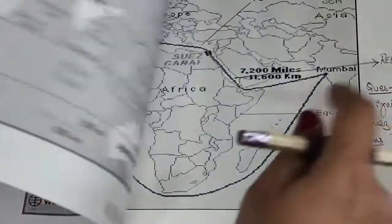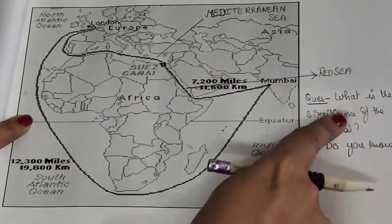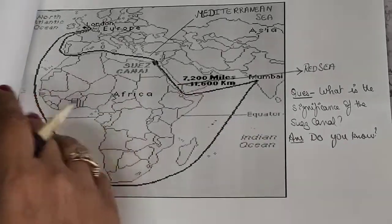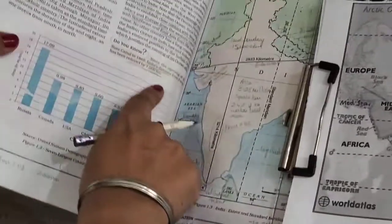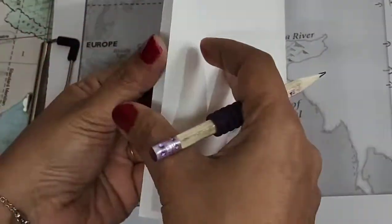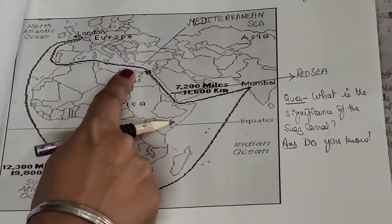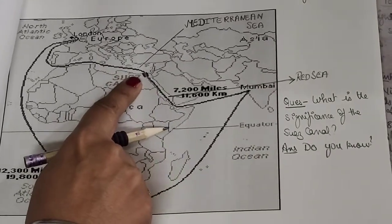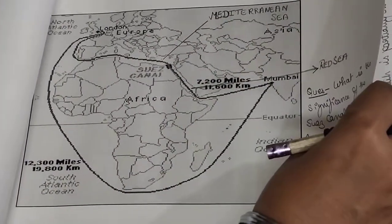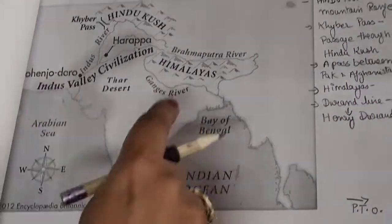Looking at the image of the Suez Canal — it is in Egypt. The most common exam question is: what is the significance of the Suez Canal? The answer is that it reduced the distance between India and Europe by around 7,000 kilometers. You can see how it lies between the Mediterranean Sea and Europe. Around 50 ships are in transit through this canal every day, showing how important this man-made waterway is.